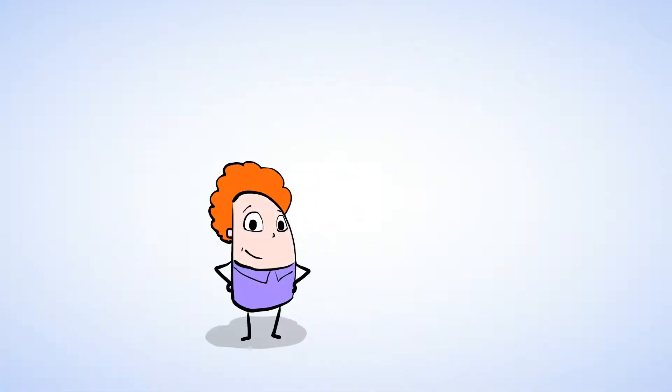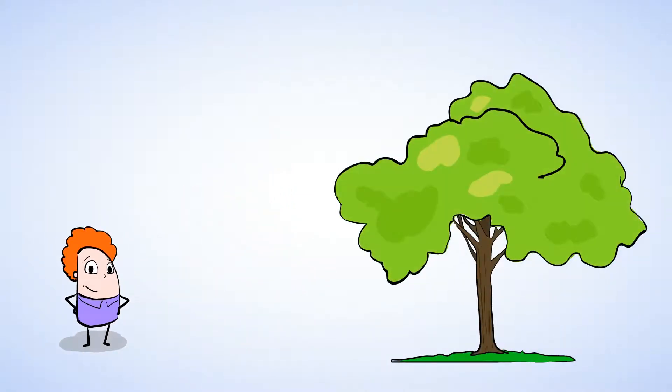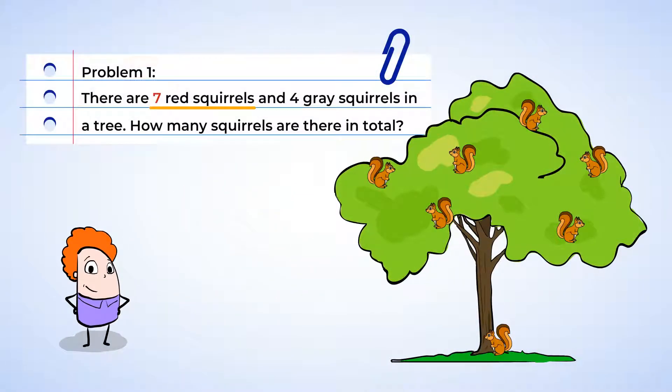There are so many different animals to see out here. Look over there. There are seven red squirrels and four gray squirrels in a tree. How many squirrels are there in total?